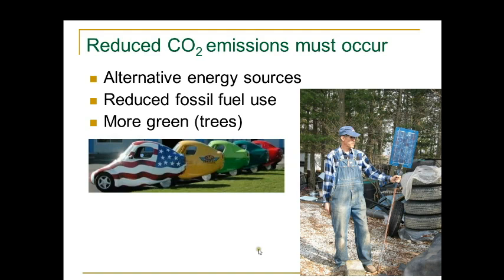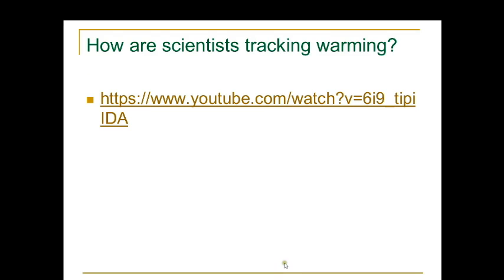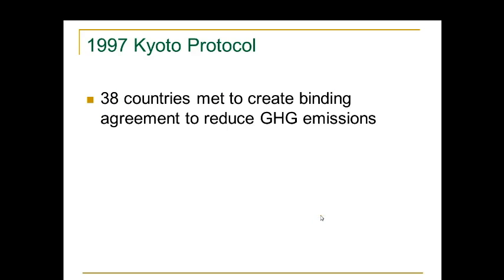How can we do this? Here are electric cars from our previous discussion, and here is Dr. Vila planting trees. How are scientists tracking warming? There is a YouTube link that will be included at the end of the unit. In 1997, the Kyoto Protocol was agreed upon — 38 countries met to create a binding agreement to reduce greenhouse gas emissions.